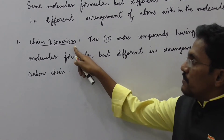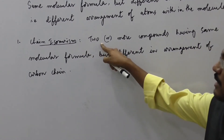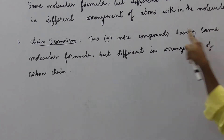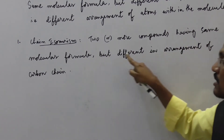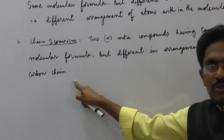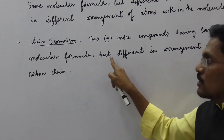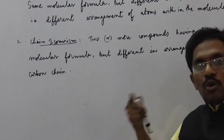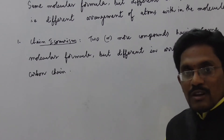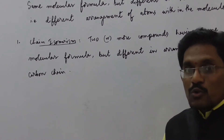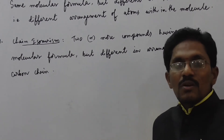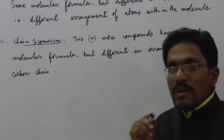Chain isomerism: two or more compounds having the same molecular formula but different in the arrangement of the carbon chain. So two or more molecules are different in the carbon chain. We will take many examples to understand chain isomerism.